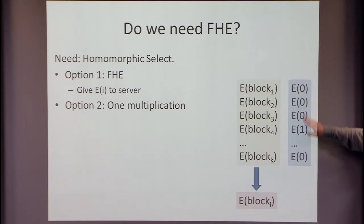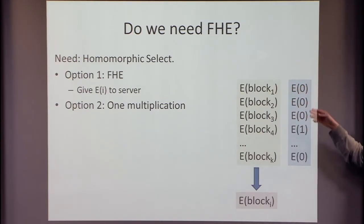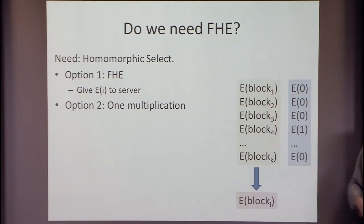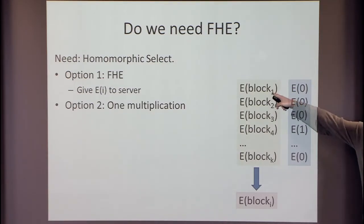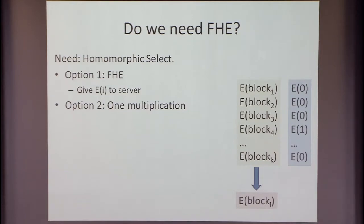You can think of this as a concrete PIR: I can encrypt bits for each location. These are much smaller ciphertexts than the whole block. I have K ciphertexts, but I think of the whole K ciphertexts as being much smaller than one block. I can communicate that — it's not a lot of communication. I can give these to the server, and the server can multiply these values and sum them up to get the encryption of block i. This just requires a homomorphic encryption with one multiplication and many additions.